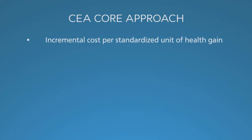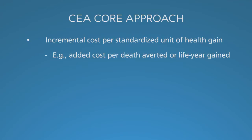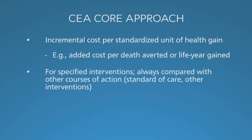Let's discuss the central cost-effectiveness analysis approach. We look at the incremental cost per standardized unit of health gain. This could be the added cost per death averted or life year gained. For whatever intervention you're assessing, you have to compare to another identified course of action. That course of action may be a standard practice like visiting doctors, or it may be a less expensive or less intensive intervention. Whatever the comparison, it always has to be specified. This is one of the critical elements of doing a cost-effectiveness analysis correctly: saying what you are comparing to what.